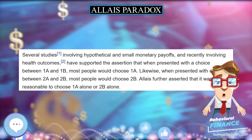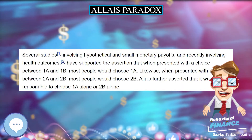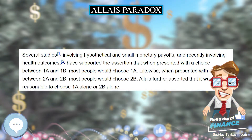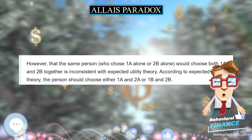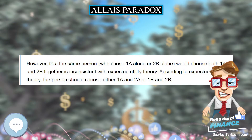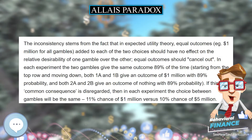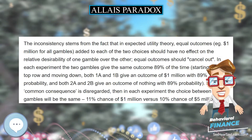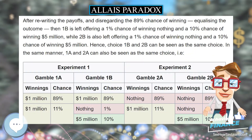The inconsistency stems from the fact that in expected utility theory, equal outcomes — e.g. $1 million for all gambles — added to each of the two choices should have no effect on the relative desirability of one gamble over the other; equal outcomes should cancel out.